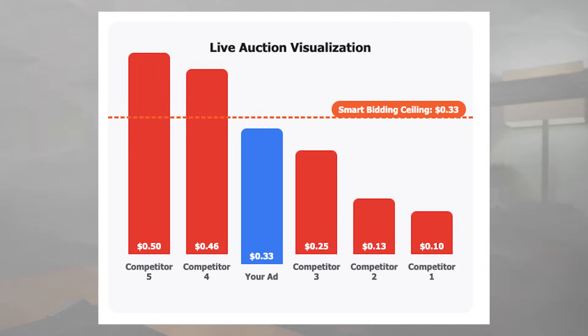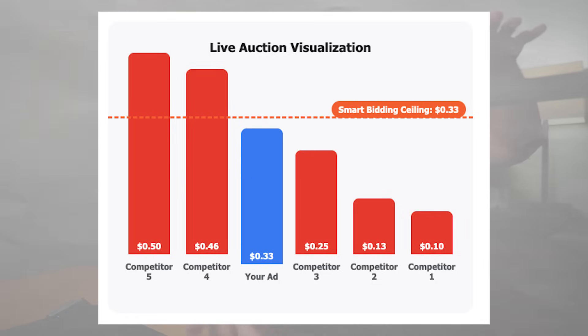In short, the reason this campaign can't spend $500 is literally because it's capped by the bid set on it — a 900% Target ROAS. There's a visual showing the live auction and the ceiling cap. Let's say your bid ceiling is about 33 cents because you're asking Google to give you a Target ROAS of 900%. Google knows a ceiling it has to operate within on average; otherwise you're not going to get the performance you're asking for.